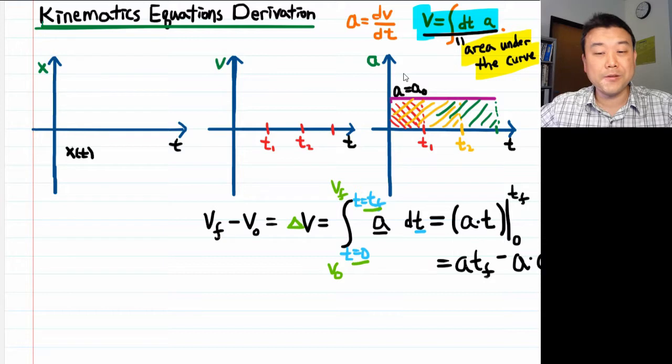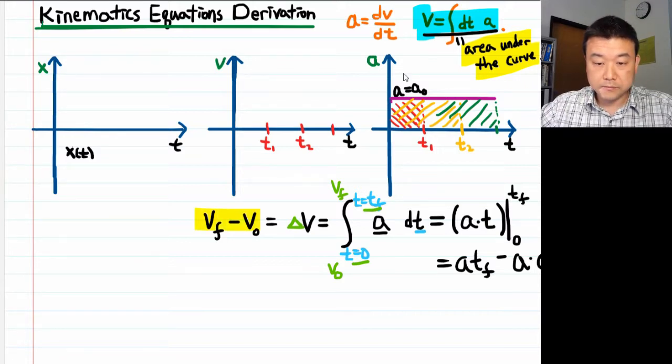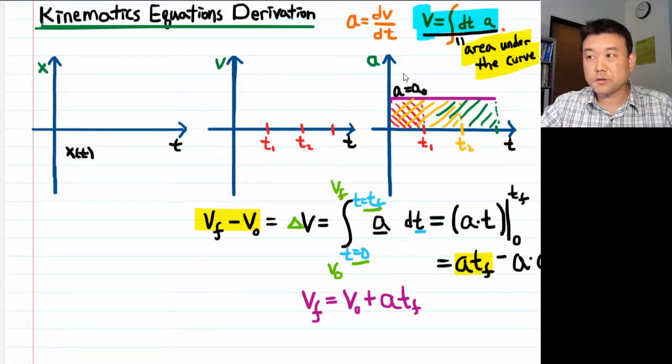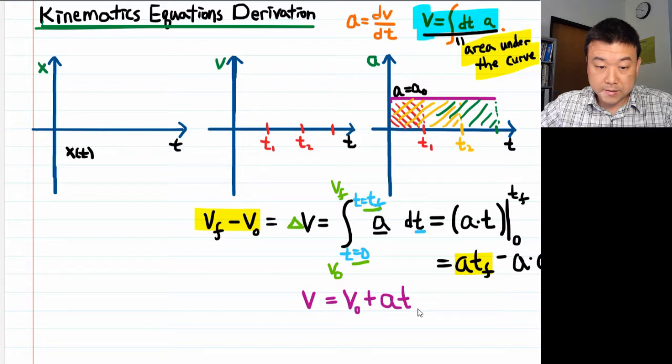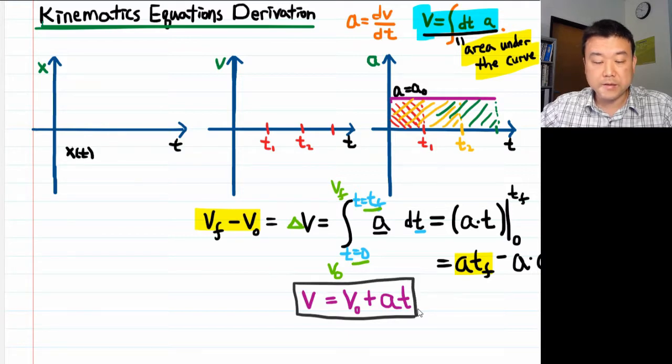And I want you to get into the habit of using this a lot more than you are used to using it in your calculus class. So we have this left-hand side here. And this right-hand side here. Let's solve this for the final velocity. Then the final velocity is equal to v₀ plus acceleration times the final time. And as in your textbook by convention, we get rid of that f subscript. So this is one of the kinematics equations for velocity under constant acceleration.